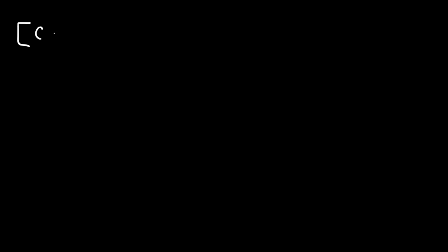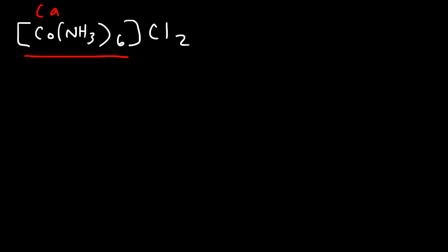In this video we're going to focus on naming coordination compounds. Let's start with this example: Co(NH3)6Cl2. The first part represents the cation, and the second part is the anion which carries the negative charge. We'll go over a few examples where the cation is the complex ion.